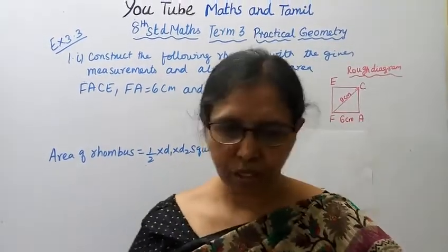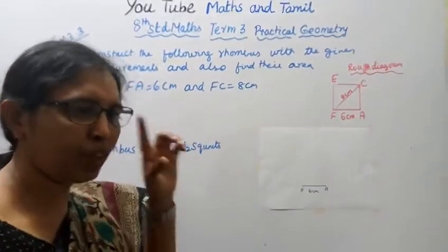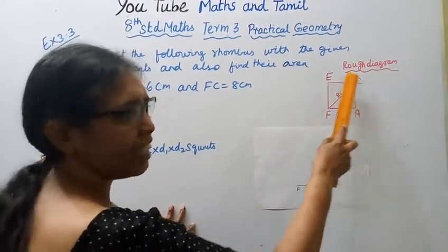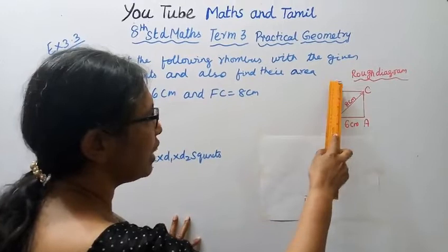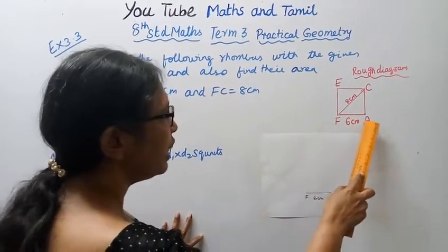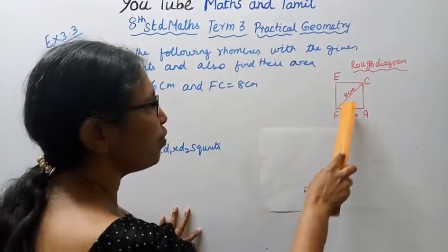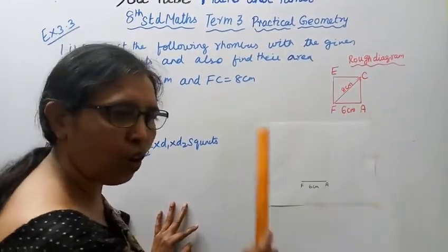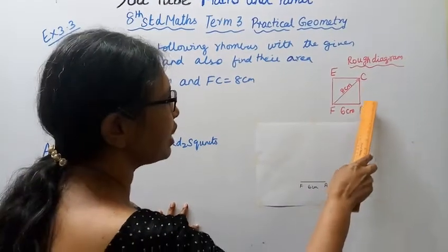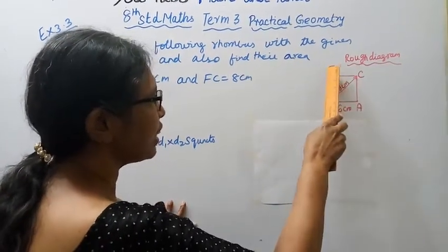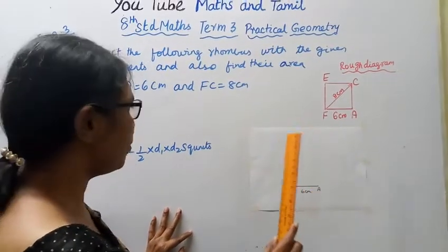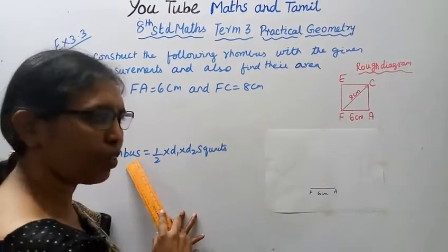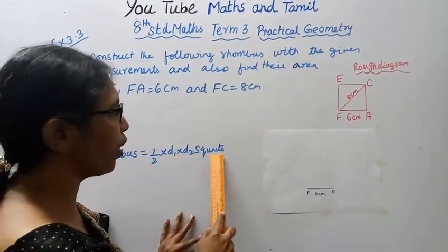This is how we draw them. First, draw a rough diagram. FACE. FA equal to 6 cm. FC is the diagonal, 8 cm. In a rhombus, all sides are equal: FA = 6, AC = 6, CE = 6, EF = 6. Area of rhombus is half into d1 into d2 square units.